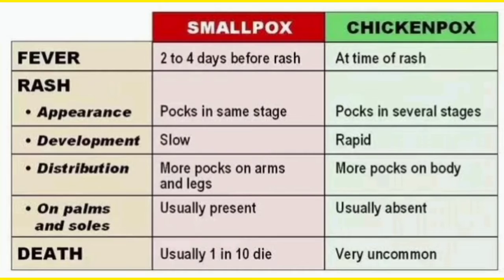Development: slow development in smallpox, rapid in chickenpox. Distribution: pox are more found on the arms and legs in smallpox, more found on the body in chickenpox. Palms and soles: smallpox rash are found on palms and soles, but in chickenpox the rash on palms and soles is absent. Death rate: in smallpox one in ten people die; in chickenpox, very uncommon.